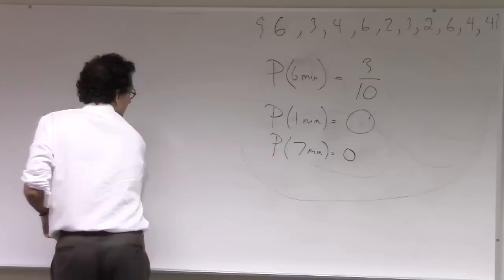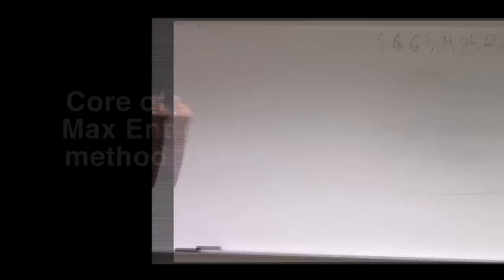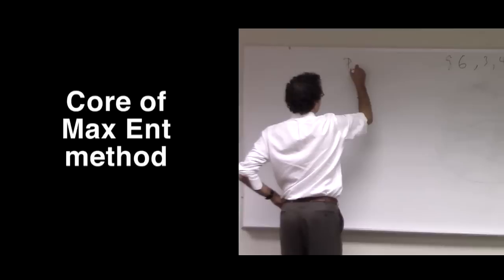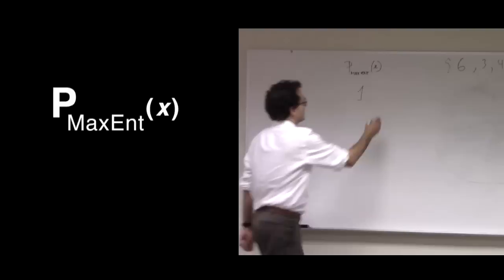So instead of doing the naive method, what I'm going to do, and this is the core of the maximum entropy method, what I'm going to do is produce a probability distribution that has two things. One, my P_maxent, this is the P_maxent that I'm going to try to produce.